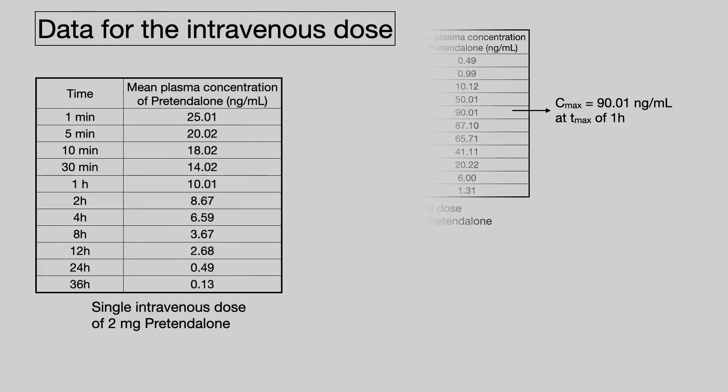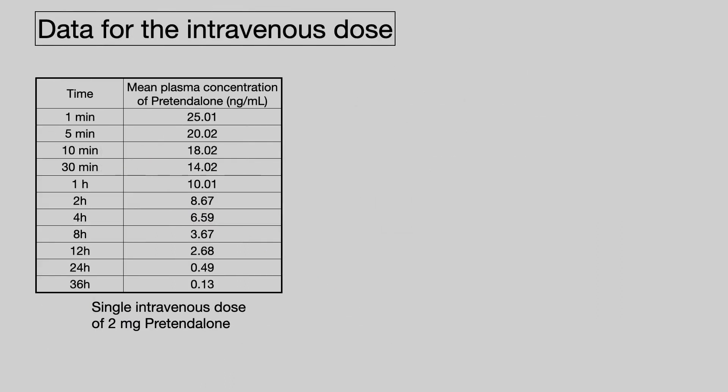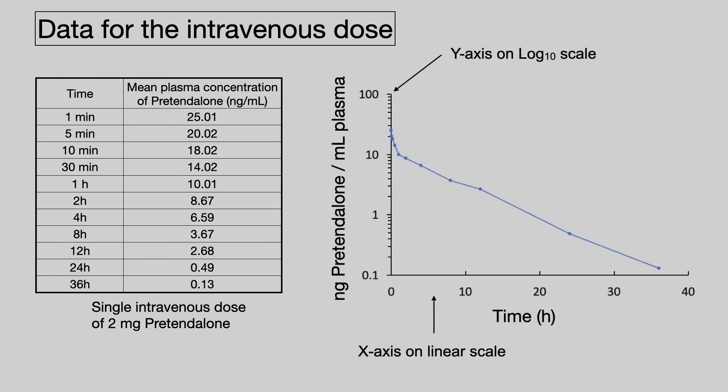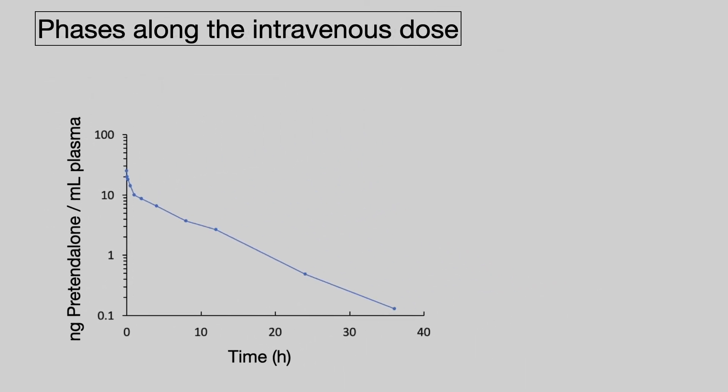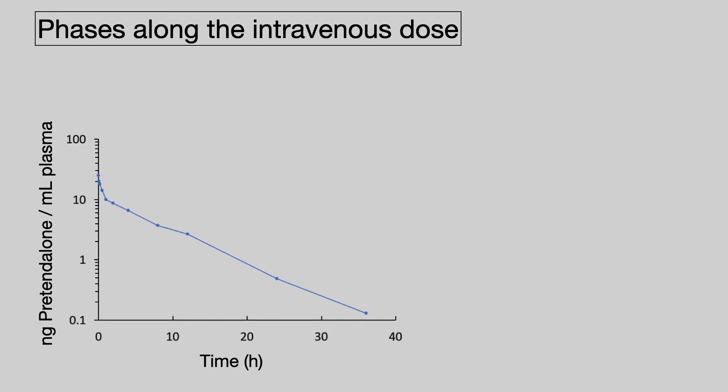We can do much the same thing for the intravenous dose. Here are the data and this is the semi-log plot of those data. We can look at the phases along this plot. We don't have an absorption phase, obviously, because the drug is injected directly into the bloodstream. Well, we do have a distribution phase. This is where the drug partitions between the plasma and other body compartments such as tissues and organs. We have an elimination phase, really much the same as was the case with the oral dose.